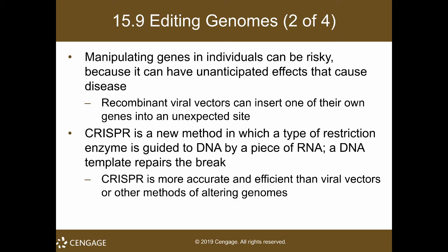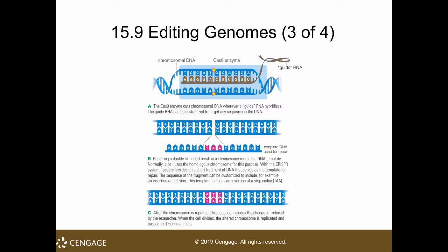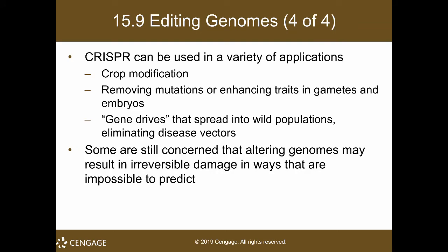CRISPR is a new method — a type of restriction enzyme guided to DNA by a piece of RNA. CRISPR provides a way to actually control where to insert the gene. In doing so, you are no longer leaving it to chance — it might otherwise be inserted anywhere and could even activate an oncogene. Since it is more accurate, you can now control insertion. However, it is still understudied, and they want to understand it fully before doing actual human studies. This is genome editing — you can make crop modifications, remove mutations, or enhance traits.